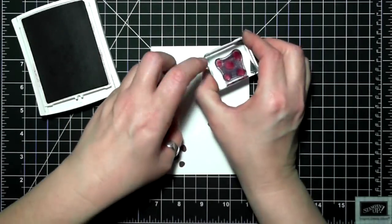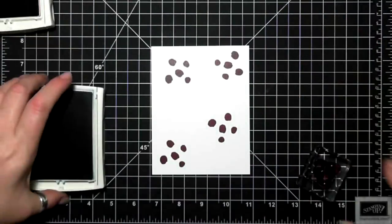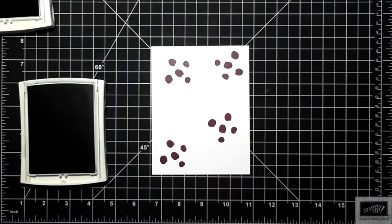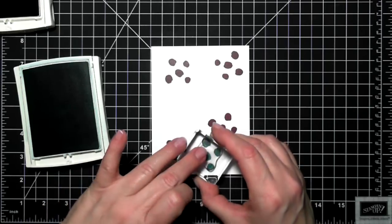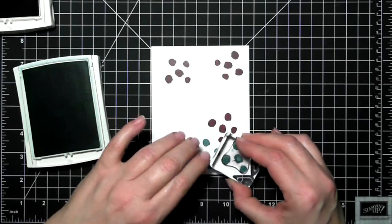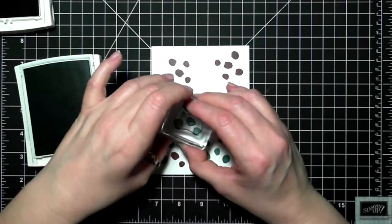You can get these free during celebration, which ends March 31st. I'm doing a background right now using Blackberry Bliss and Lost Lagoon, and at the very end of the video you'll see a different colorway and a slightly different version of this card.